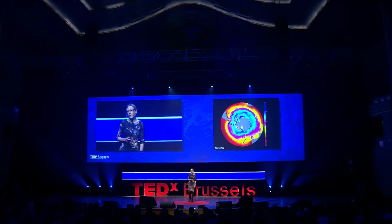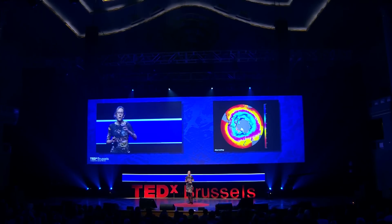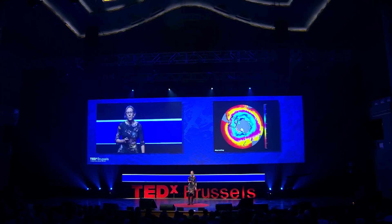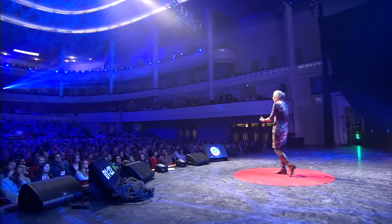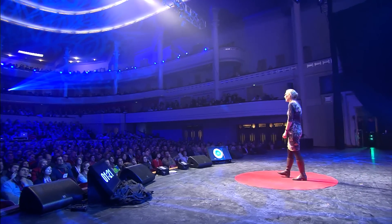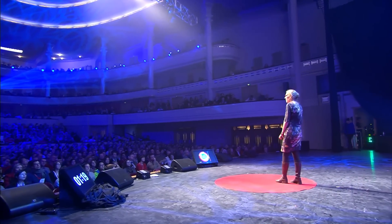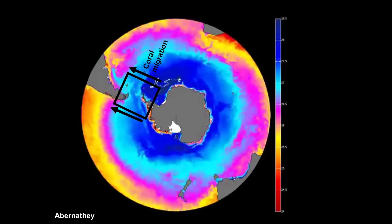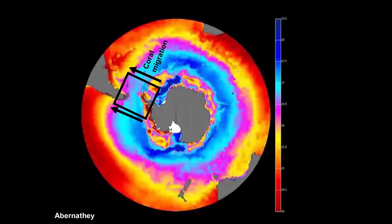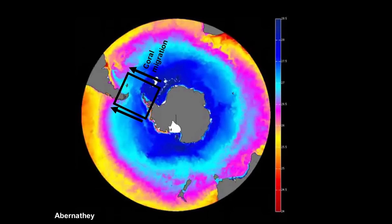We've collected corals from back and forth across this Antarctic passage. From our uranium dating, we found quite a surprising thing: the corals migrated from south to north during the transition from the glacial to the interglacial. We don't really know why, but I think it's something to do with the food source and maybe the oxygen in the water.